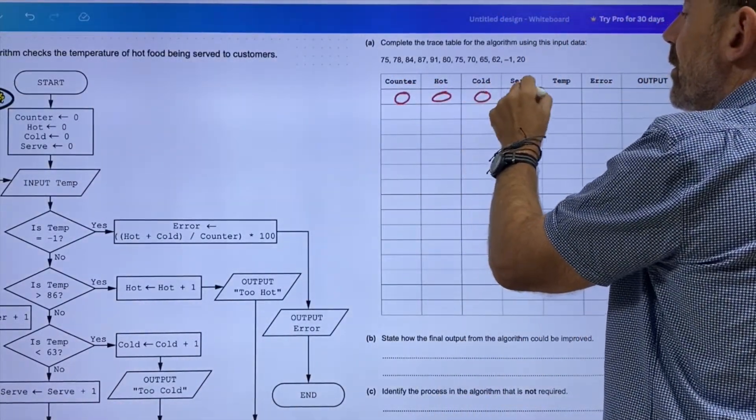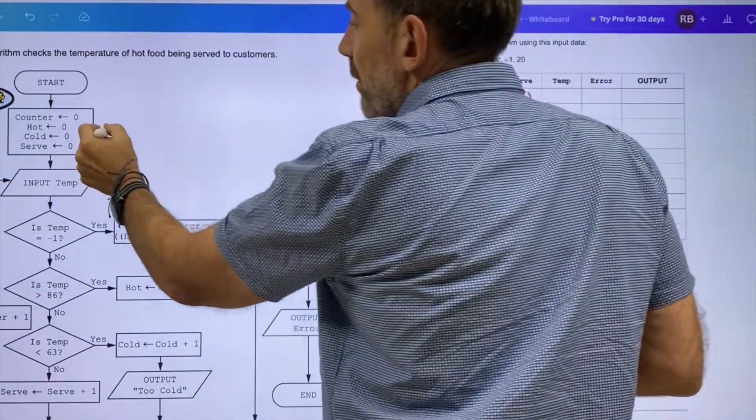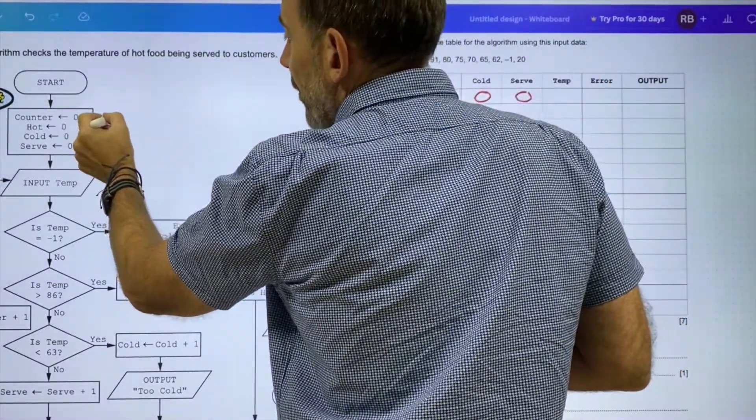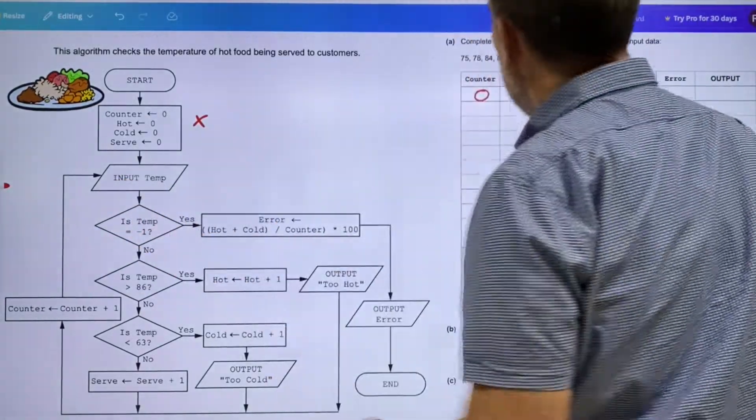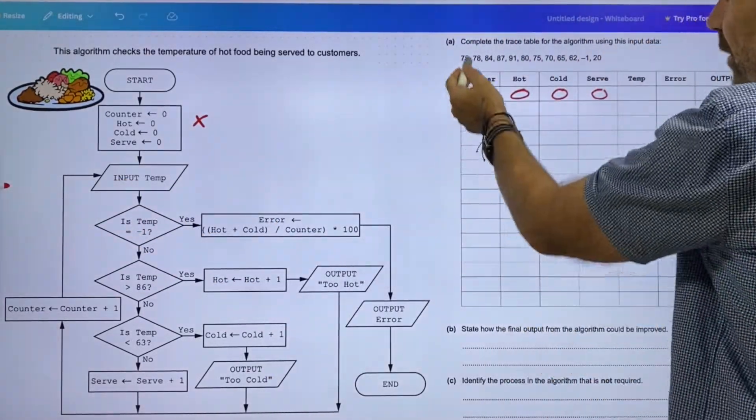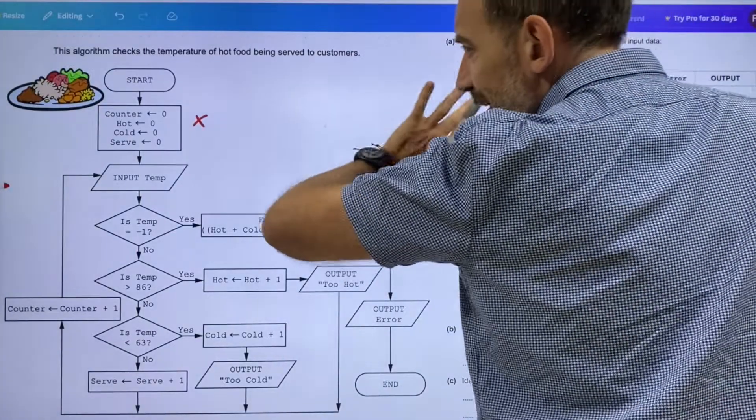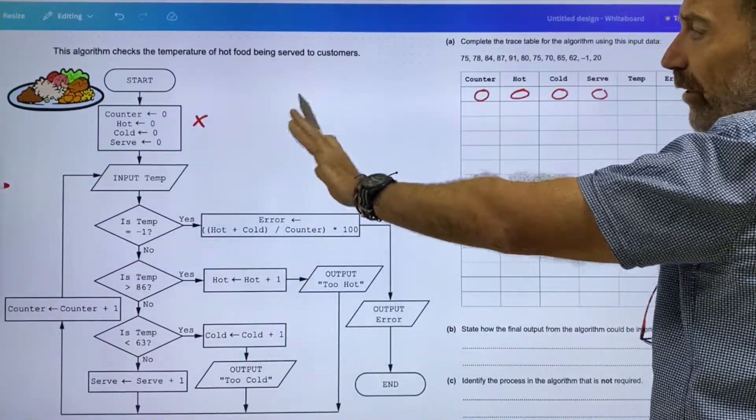There is a minus one in here, which we'll throw out. That's the end, so 20 is probably not going to be used. Counter—so we're going to put in zero, zero, zero, zero. We don't need to use that bit again.